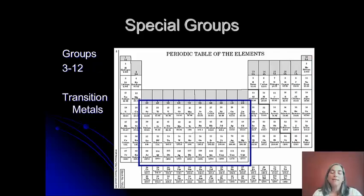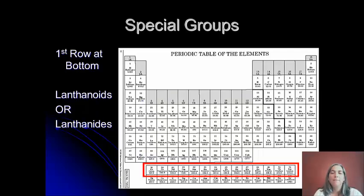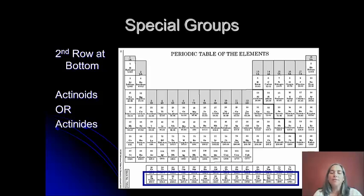That center block is called the transition metals, and as you can see, they're all metals. You may recognize some of them: copper, nickel, iron. The first row at the bottom is typically called the lanthanides — when I grew up they were called the lanthanoids, but times have changed. The second row at the bottom is called the actinides. We'll talk more about why they're split off at the bottom when we get a little further into the periodic table.